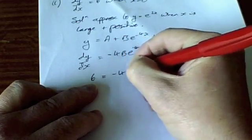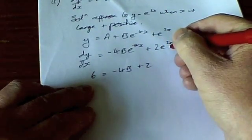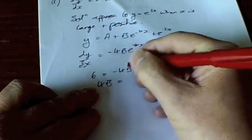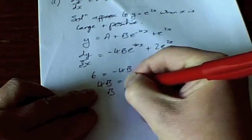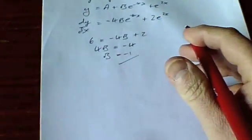Minus 4B plus 2 here and so my 4B is going to equal, -4B equals -4, so B equals 1. That's the first of my two arbitrary constants found.